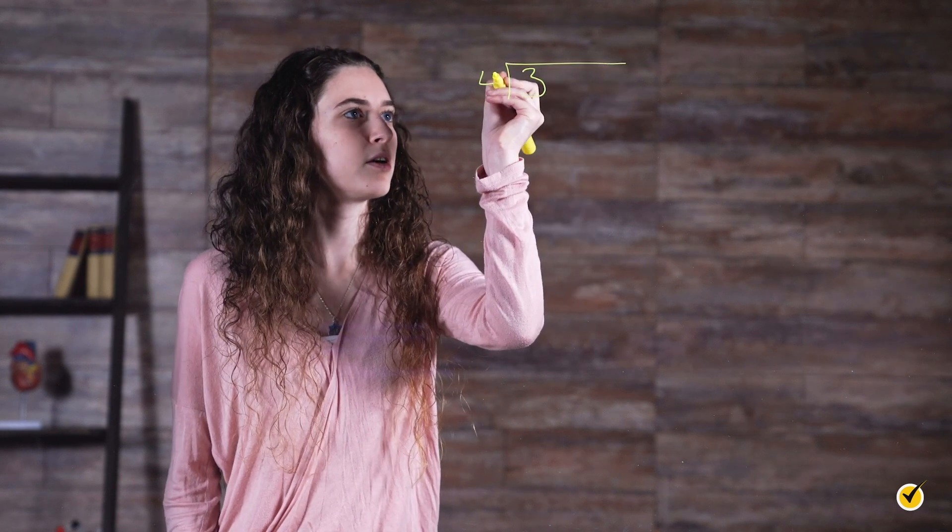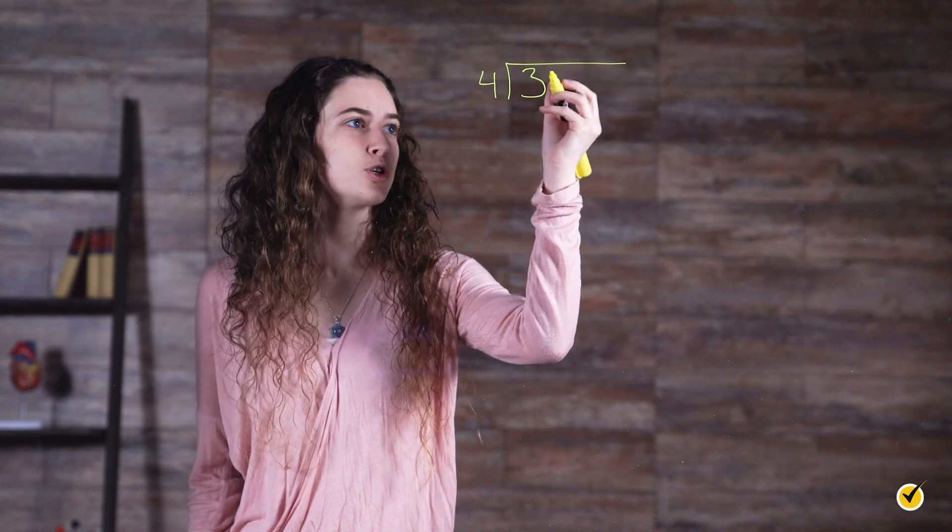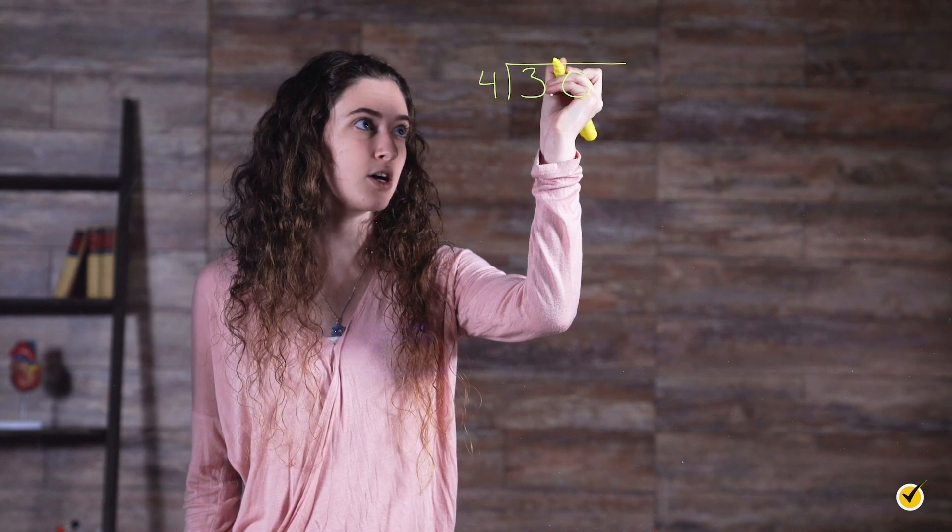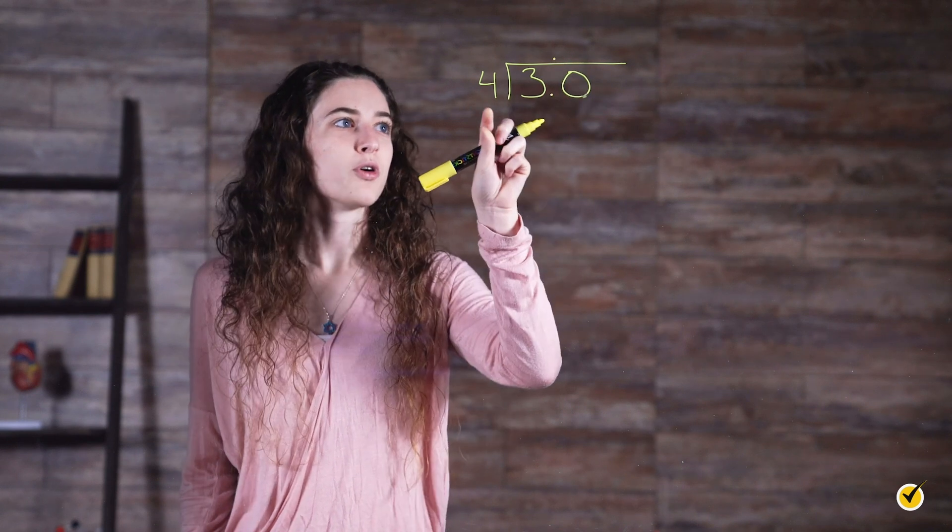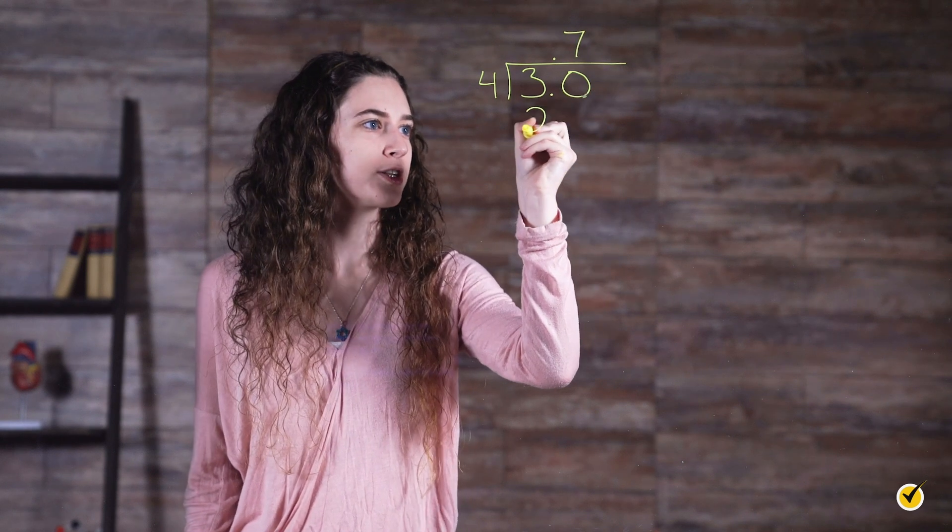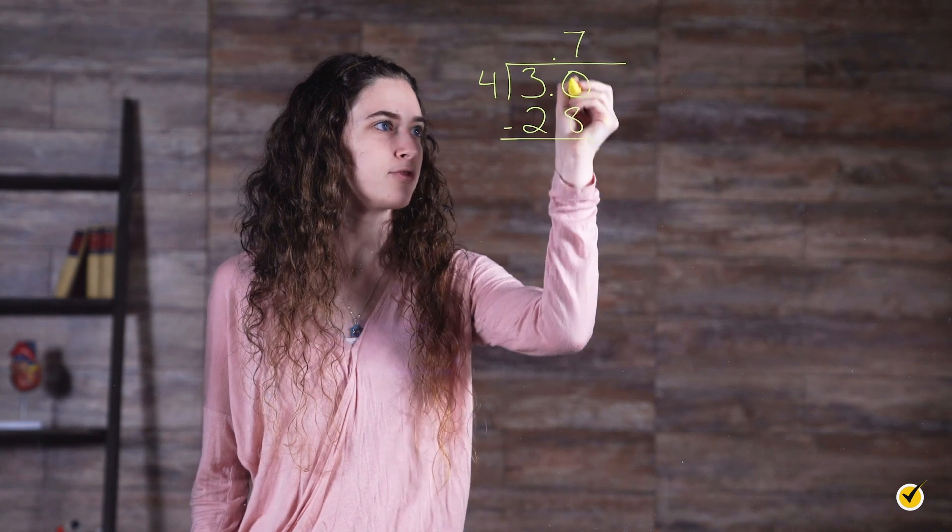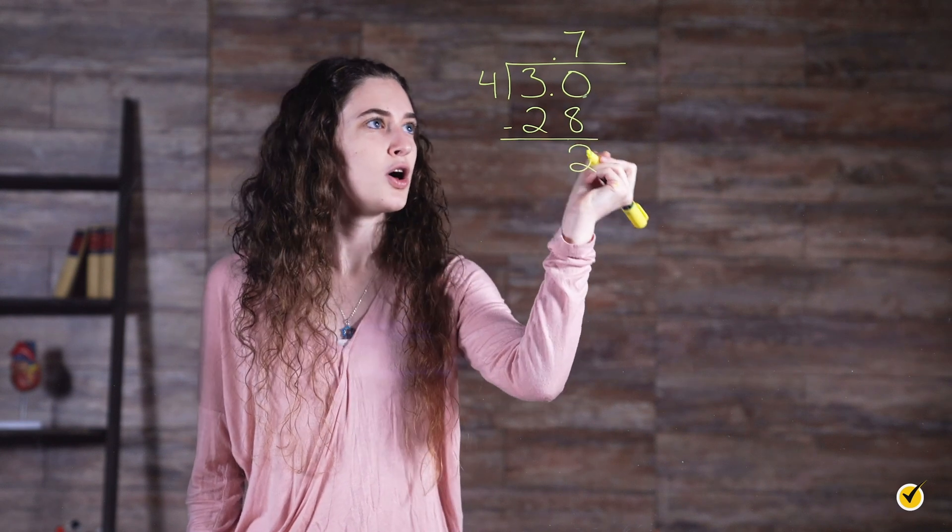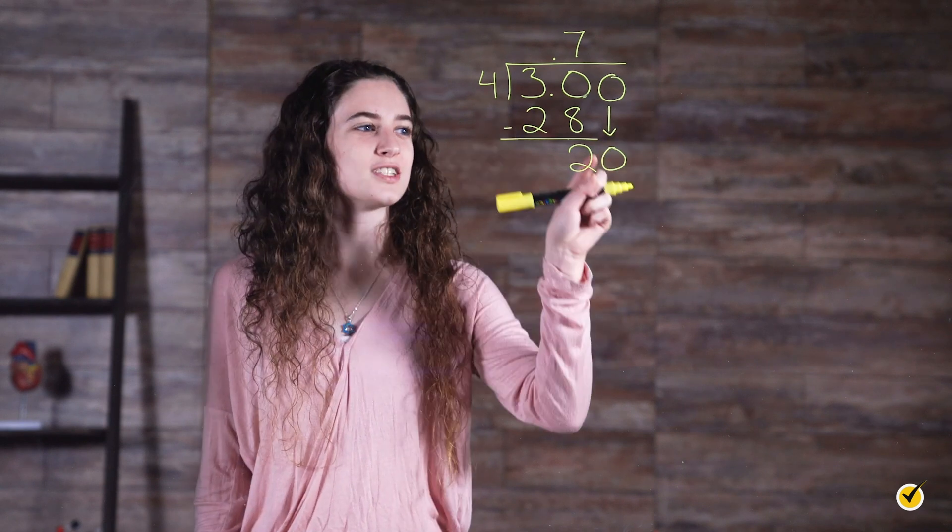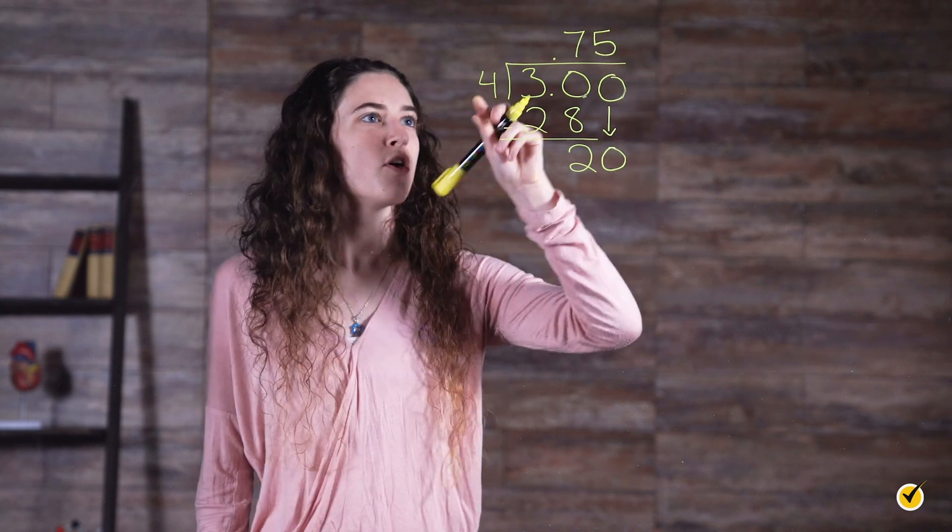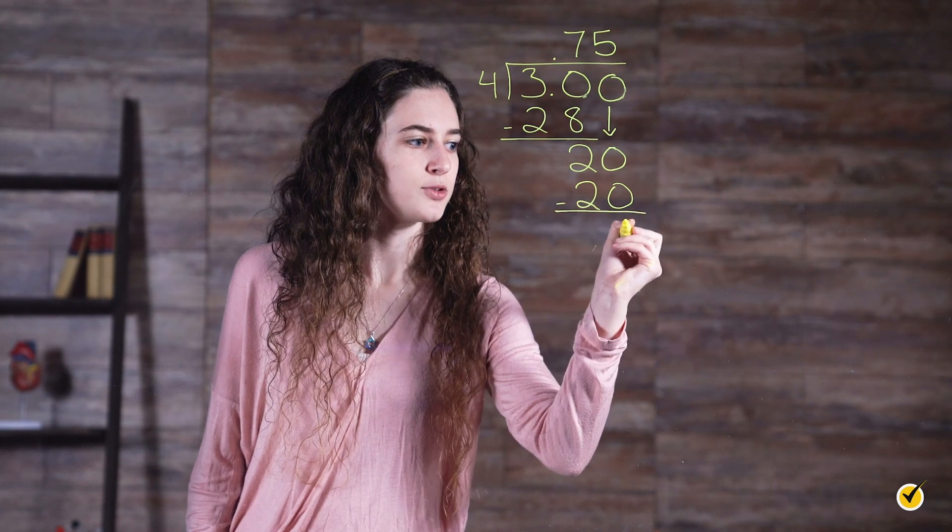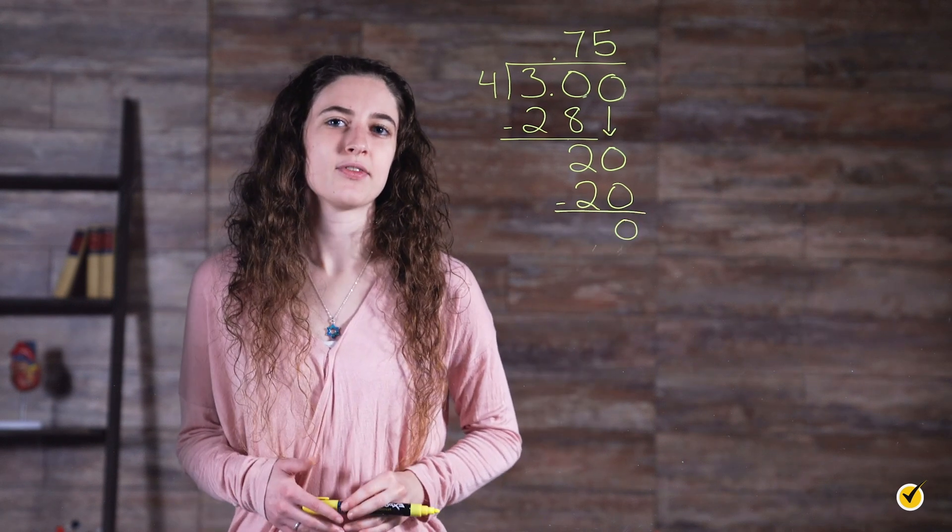Three divided by four. Four can't go into three at all, so we add a decimal point and put a zero. Since we added a decimal point here, we need to add it to the top as well. Four goes into thirty seven times. Seven times four is twenty-eight, so we write twenty-eight and subtract, and we're left with two. We then add another zero and bring it down, and then see four goes into twenty five times. Four times five is twenty. And when we subtract, we get zero, so three-fourths is equal to 0.75.